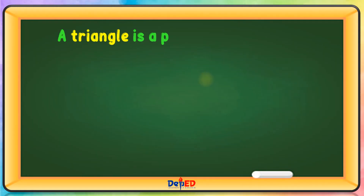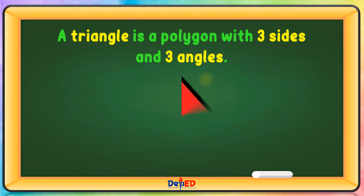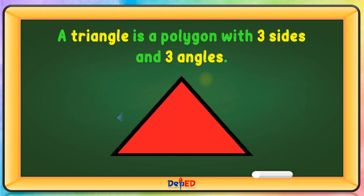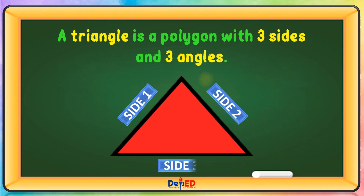A triangle is a polygon with three sides and three angles. Side one, side two, and side three. And we have one angle, the second angle, and the third angle.